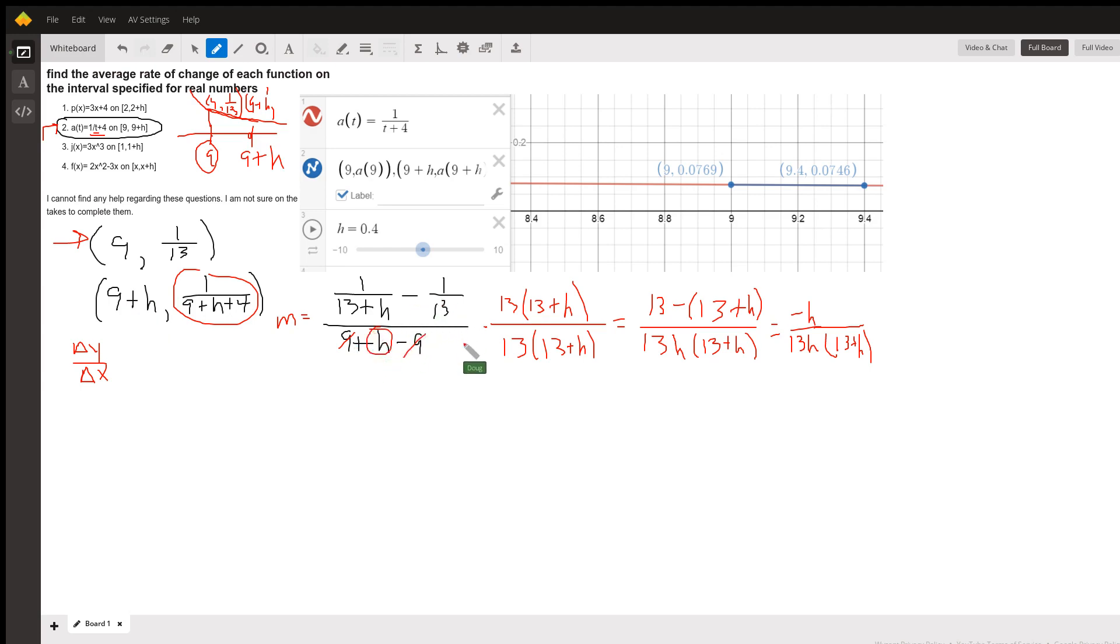Now to simplify this, I can multiply numerator and denominator of the big fraction by the common denominator of the little denominators. So 13 times (13 plus h) is the LCD. When I take that times this term, the 13 plus h is canceled out,